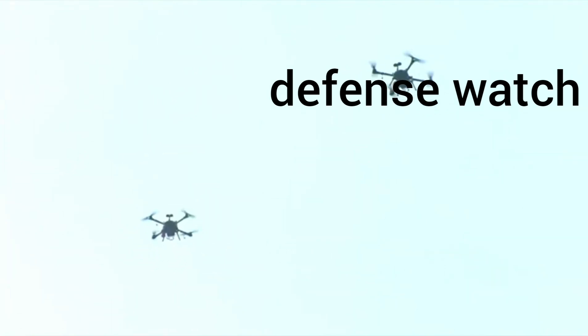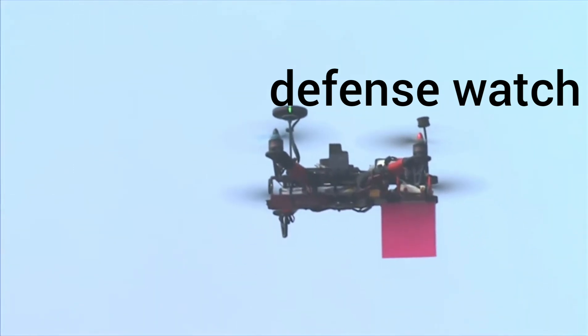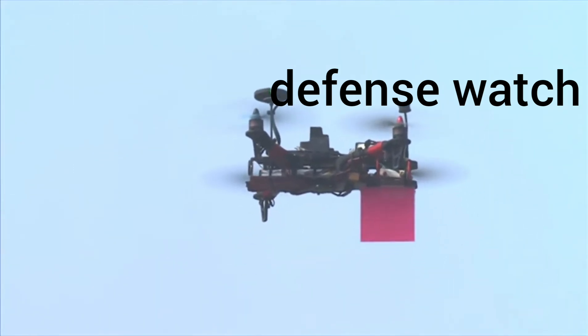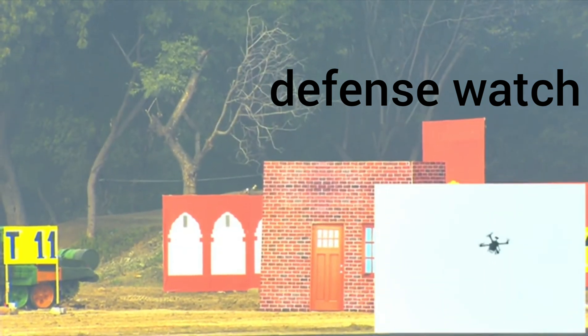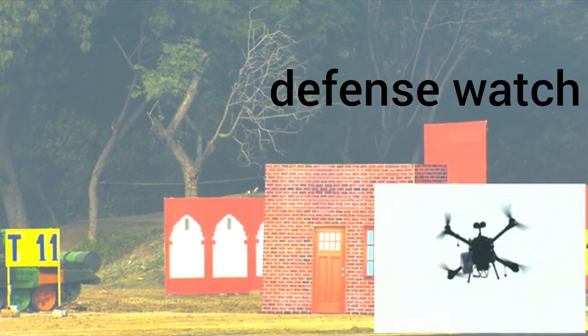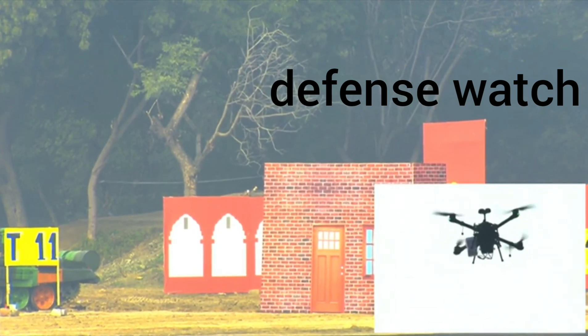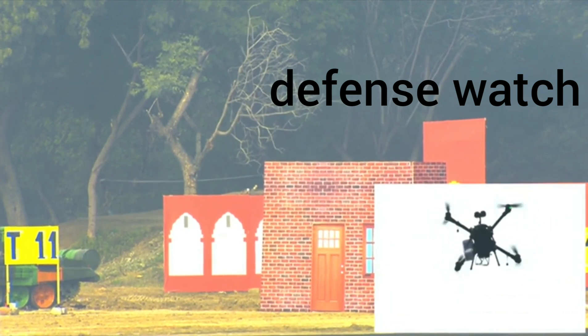The child drones hovering above the center of the parade ground have completed the orientation process, identified and acquired the targets. Having optimized their attack trajectories, they are now ready to execute the kamikaze strikes using DSMAC for terminal effect. Please take your attention to the terror hideout Tango 11 on your right to witness the kamikaze kinetic strike.